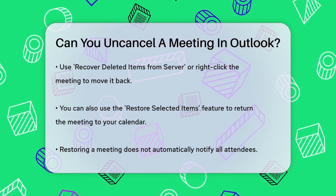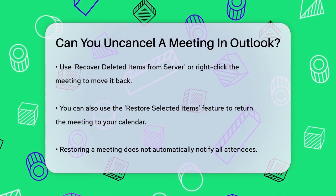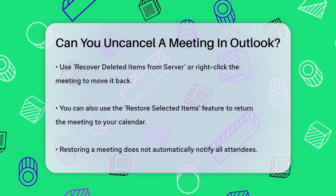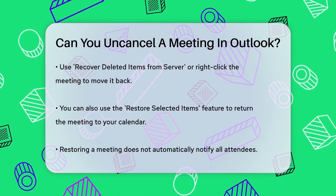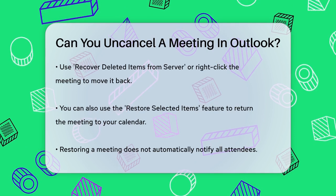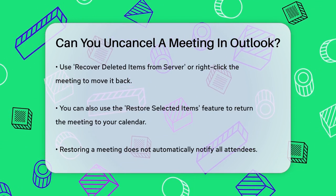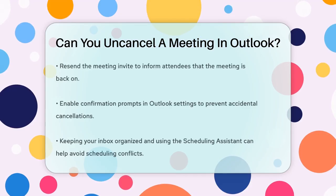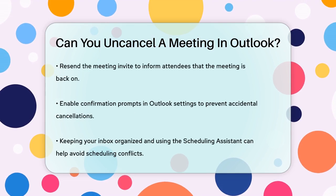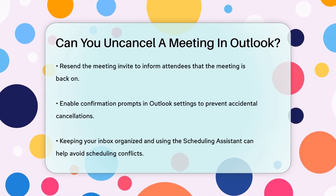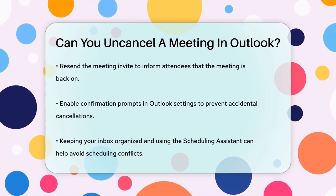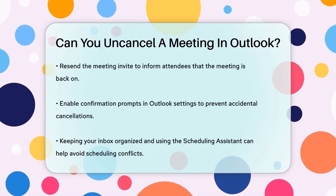To avoid accidental cancellations in the future, you can enable confirmation prompts in Outlook settings. This way, if you try to delete or cancel a meeting, Outlook will ask you to confirm the action, providing a safety check.